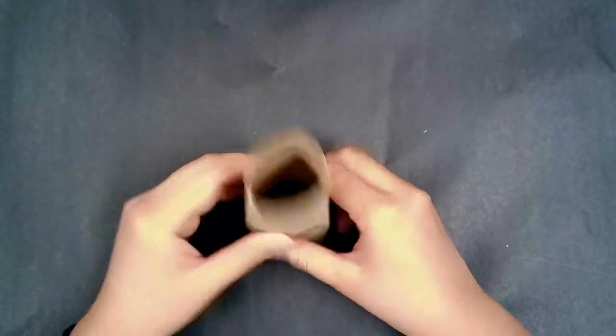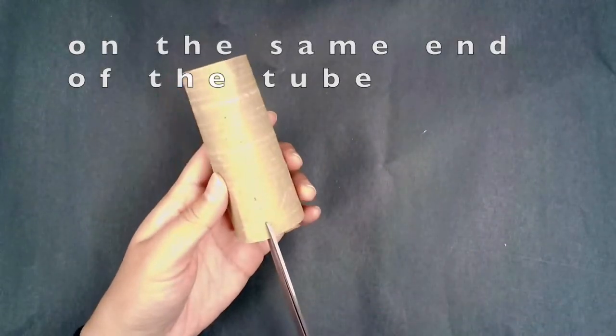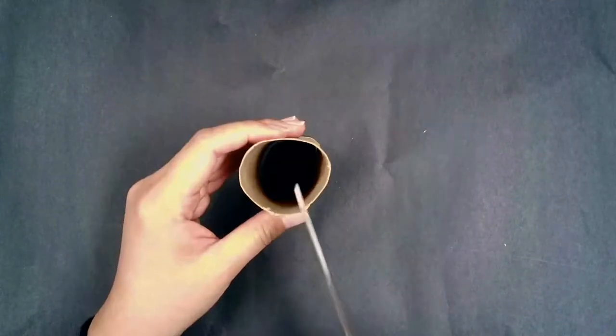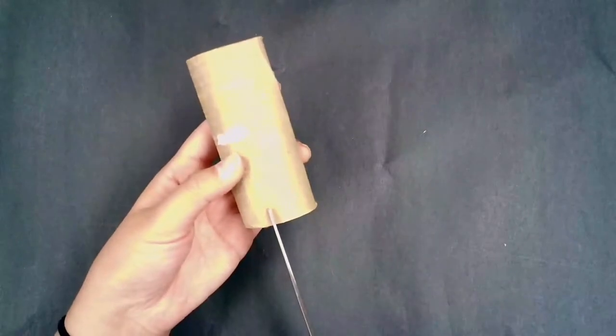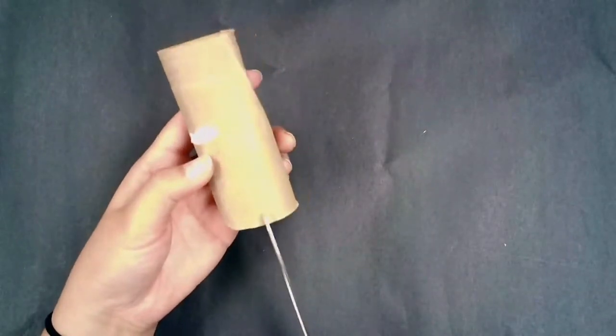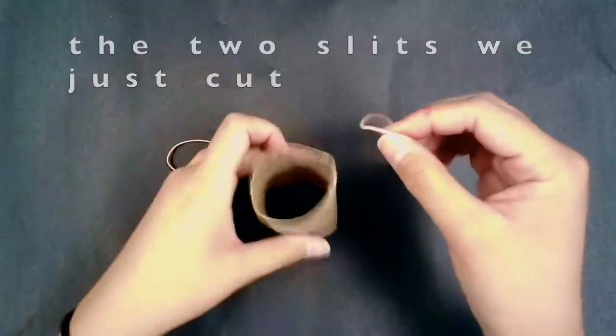Now we're going to take the second tube and cut two small slits on the same end of the tube directly across each other. And then we're going to pull the rubber bands through the two slits we just cut.